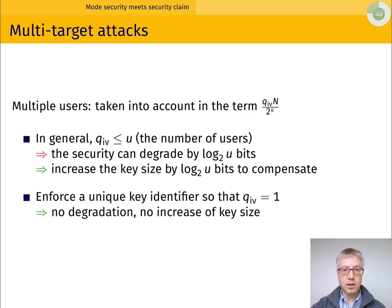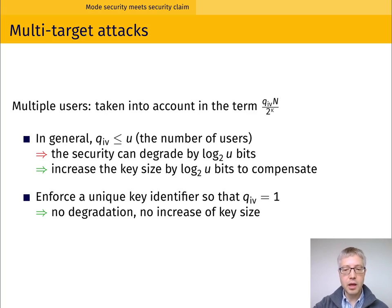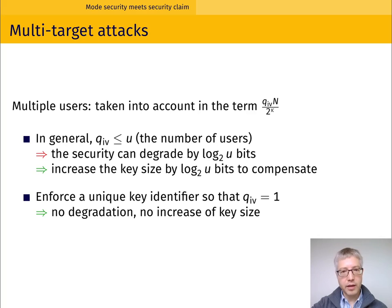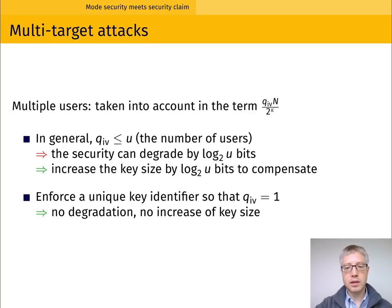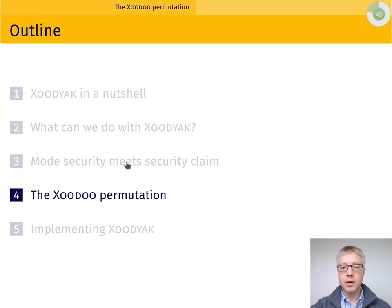Another way to address multi-target attacks using Zodiac is to enforce the use of a unique key identifier. Each key has an ID and this ID is absorbed at initialization. In that case, q_iv is guaranteed to always be one, so there is no degradation of security against multi-target attacks and no need to increase the key size.